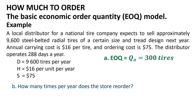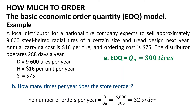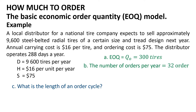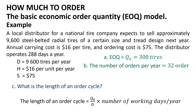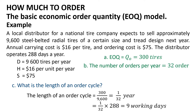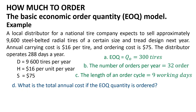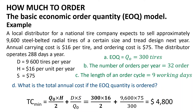To find the number of orders per year, divide annual demand by the EOQ: D / Q₀ = 9,600 / 300 = 32 orders per year. The length of the order cycle equals Q₀ / D × working days per year = (300 / 9,600) × 288 = 9 working days. The total cost when the EOQ is ordered: TC = (Q₀ × H / 2) + (D × S / Q₀) = (300 × 16 / 2) + (9,600 × 75 / 300) = $4,800.